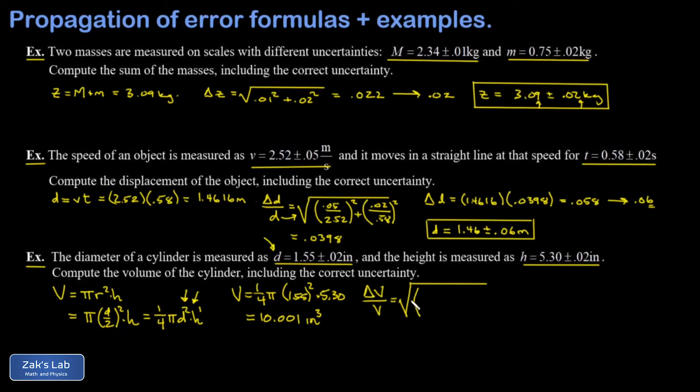And remember, because the diameter was squared, a factor of two is going to come out in front of this term. And then I put in the uncertainty in D divided by D itself, square the result. The second term is the uncertainty in H divided by H, all squared. I'm going to add those up and square root the result.